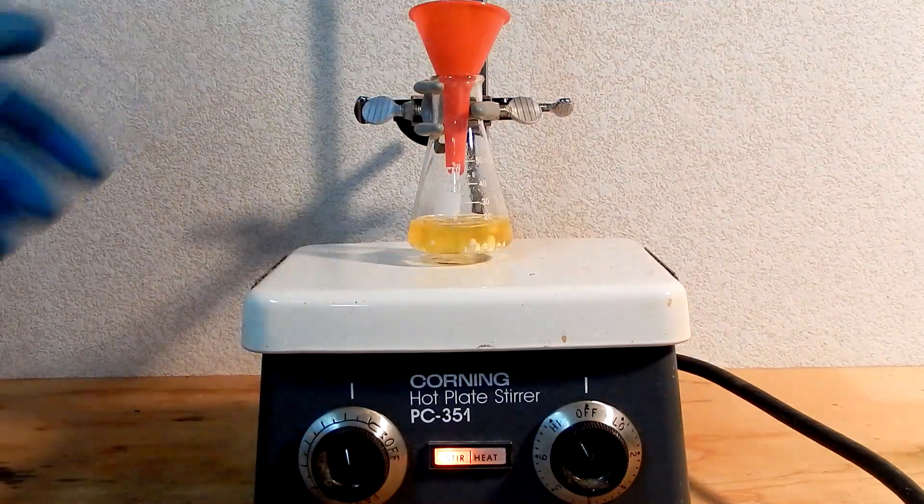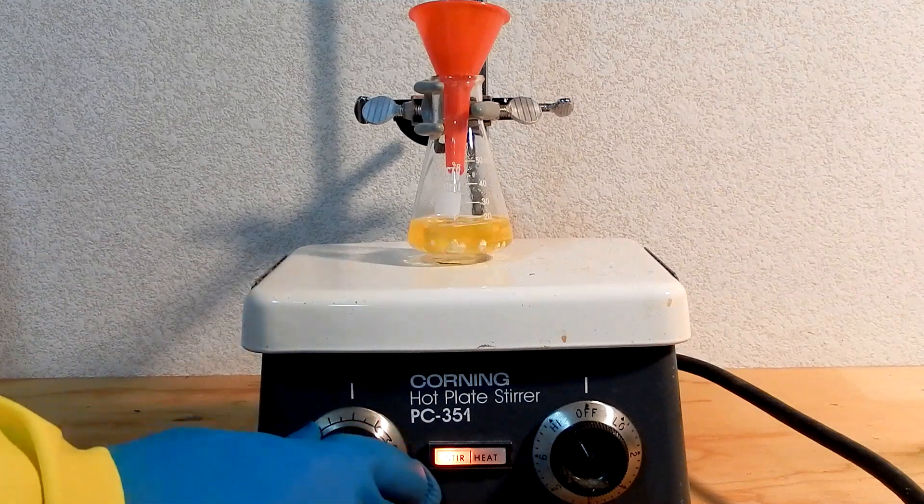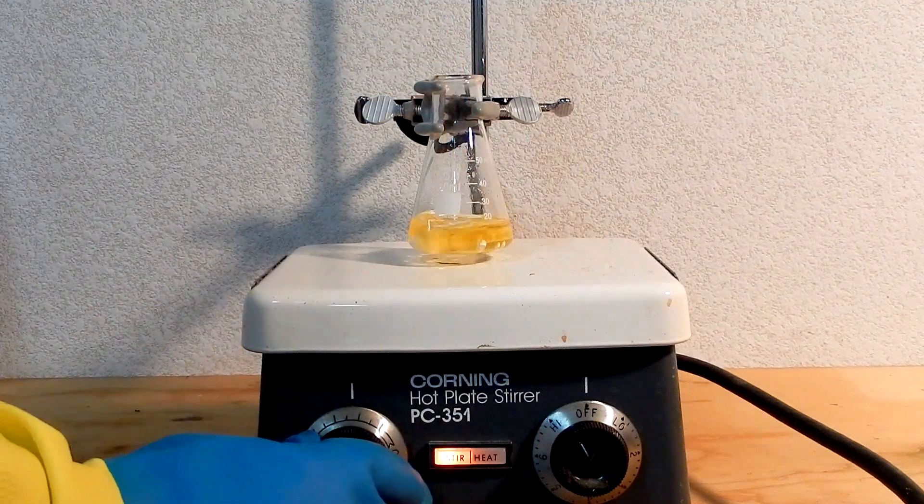This removes any traces of water from the chlorobenzene. Place the flask on a magnetic stirrer and stir it for about 30 minutes to complete the drying process.